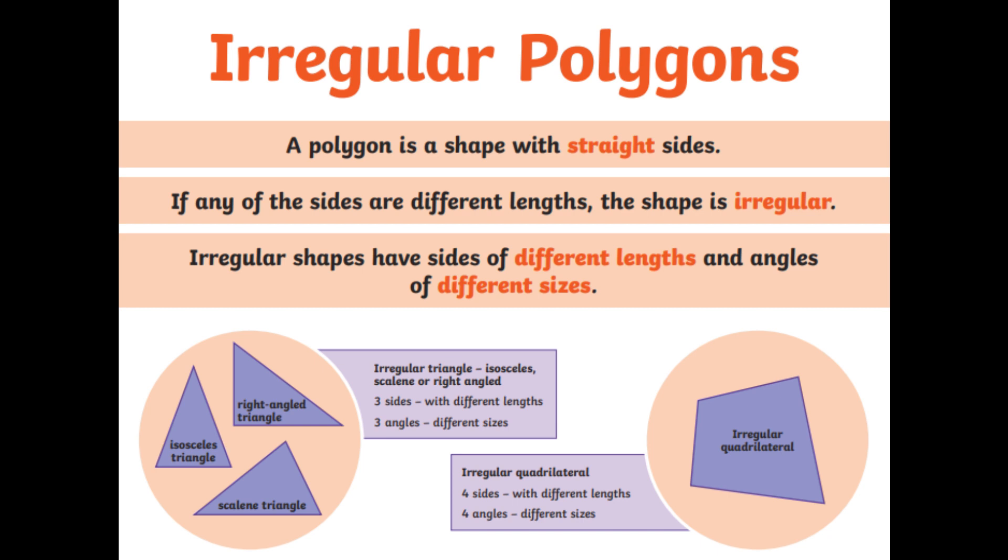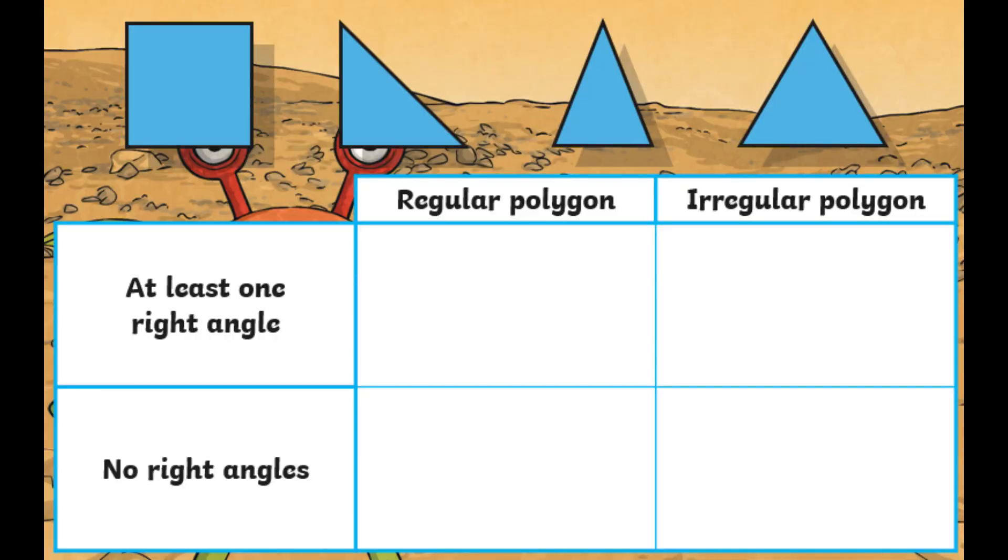So first problem we're going to have a look at together is I have got my Carroll diagram. Across the top, you can see it says regular polygon and irregular polygon. Then the left-hand side, at least one right angle or no right angles. So the challenge that I want you to have a go at with me first is can we sort these four shapes that you can see across the top, the blue ones, into the correct part of the diagram. So from left to right, we've got a square, a right-angled triangle, an isosceles triangle, and an equilateral triangle.